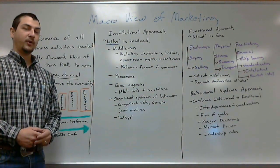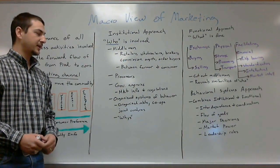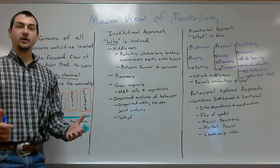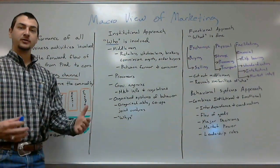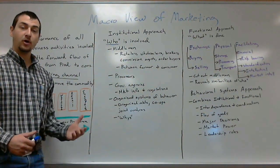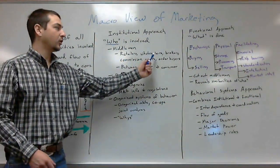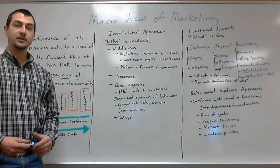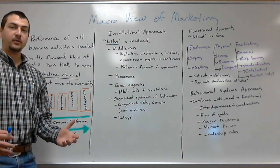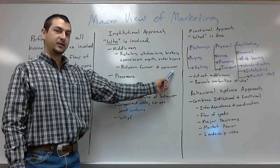Some examples of who might be involved are the middlemen or the processors, governmental agencies, or organized systems of behavior. The middlemen — those people in the middle of the production chain of this marketing channel — are often considered retailers, wholesalers, brokers, commission agents, or order buyers. The middleman is nothing more than somebody in between the farmer and the consumer.